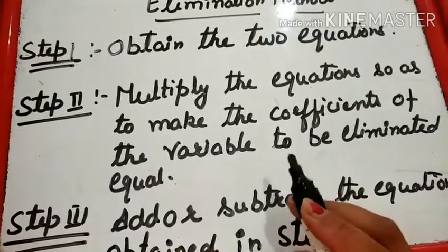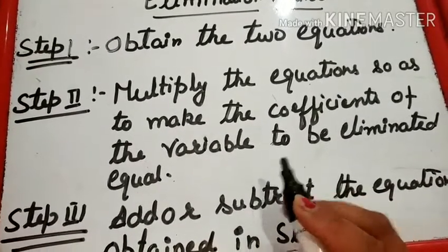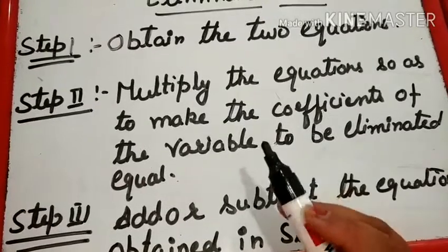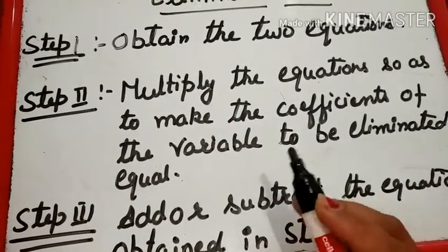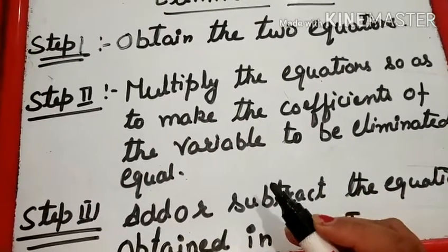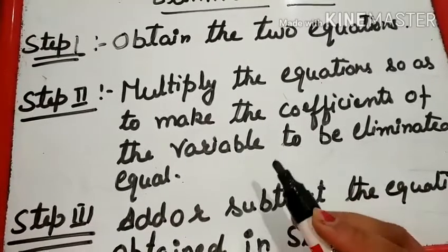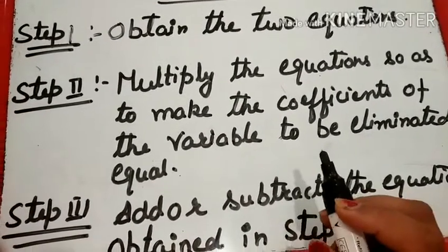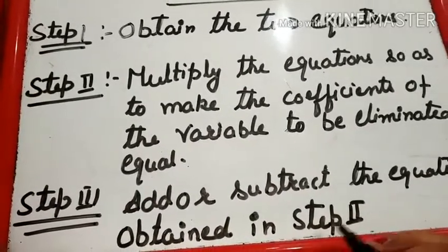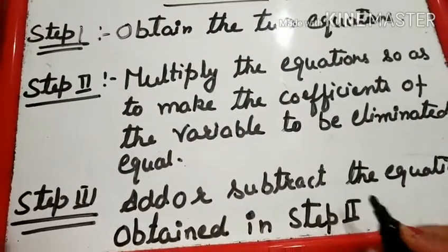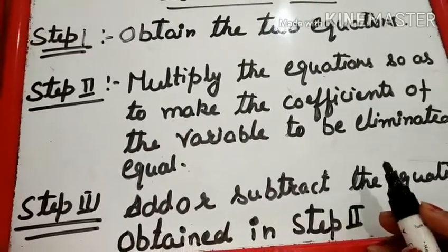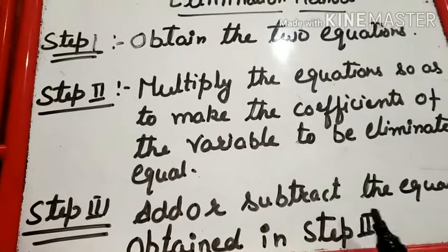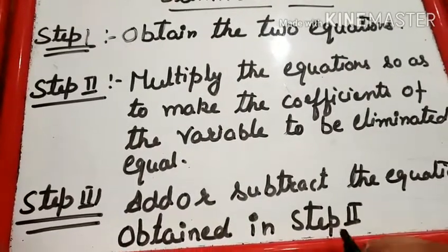हमारे पास X का एक Coefficient होता है और एक Y के साथ। आपने जिसको Decide किया है कि आप किसको Eliminate करना चाहते हैं, उसको Equal बनाना है। Multiply करना है उनके अपने Coefficient के साथ — जो दूसरी Term का Coefficient होगा उसको First Term के साथ Multiply करना है, जो First का Coefficient होगा उसको Second के साथ Multiply करना है, जिससे वो दोनों Same हो जाएं। Step 3: Add or Subtract the Equations obtained in Step 2। क्योंकि हमने उनके Coefficient Same बनाए, इसलिए उसको Eliminate करना था — According to Sign, जहां Add करना है जहां Subtract करना है।